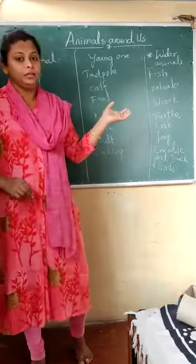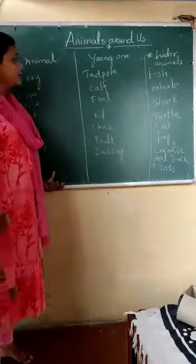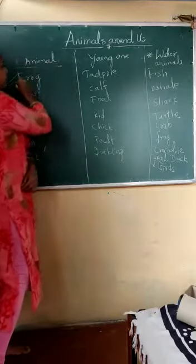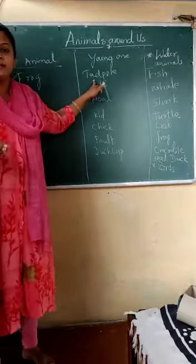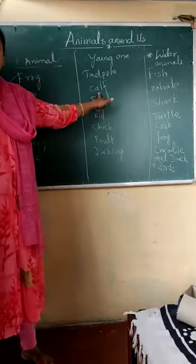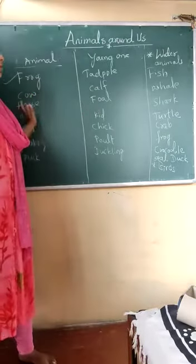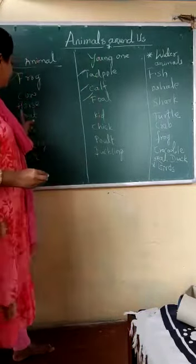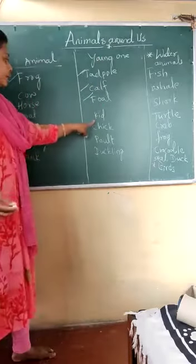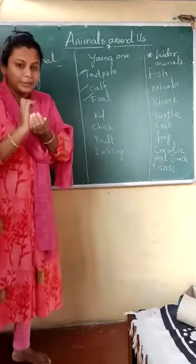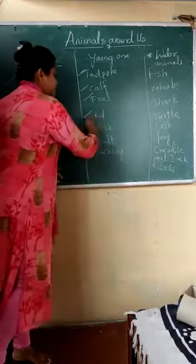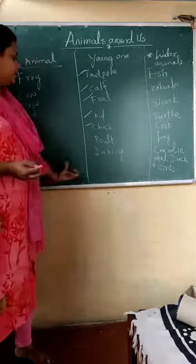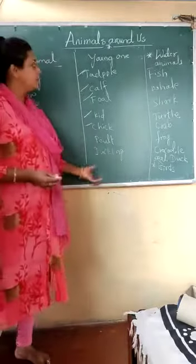Now let's look at the young ones of some animals. The young one of a frog is known as a tadpole. The young one of a cow is known as a calf. The young one of a horse is known as a foal. The young one of a goat is known as a kid. The young one of a hen is called a chick. The young one of a turkey is known as a poult. The young one of a duck is known as a duckling.